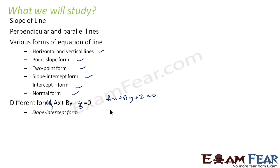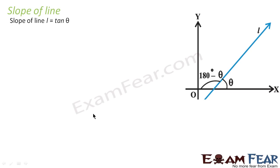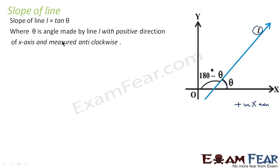First, we study slope of a line. The slope of a line L is tan θ, where θ is the angle the line makes with the positive x-axis. Please note it is the positive x-axis. So for line L, slope equals tan θ.